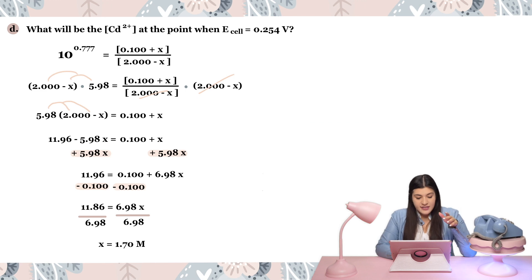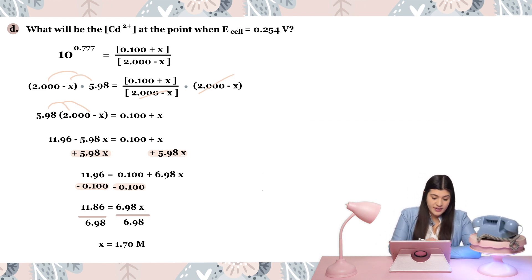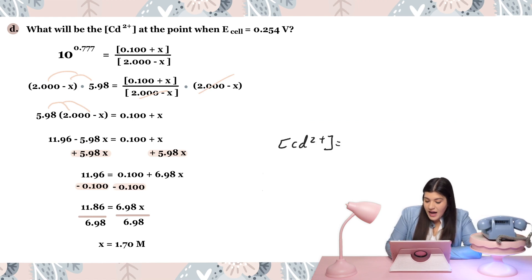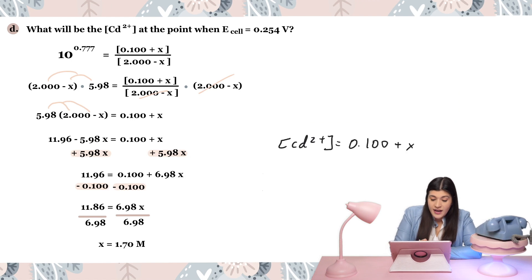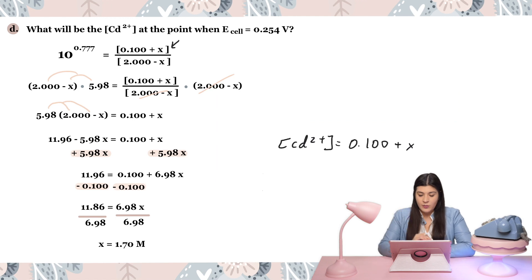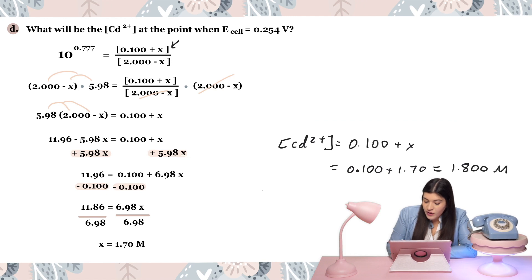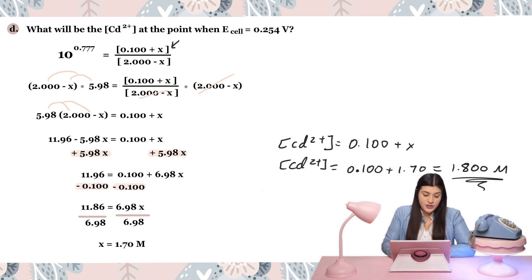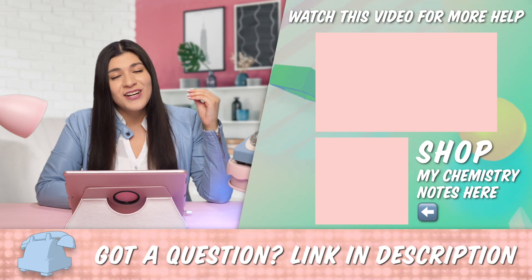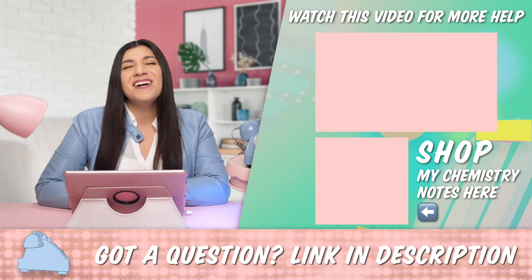We're not done — X is just the change. The final concentration of cadmium 2-plus is 0.100 plus X, which is 0.100 plus 1.70, giving us 1.800 M. That is our final answer: the cadmium 2-plus concentration is 1.800 molar. I hope that cleared up some confusion and makes electrochemistry make more sense. If you'd like your question answered just like Brittany did, check the description box for the link to submit a question — I'll see you in my next video.